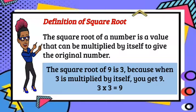To explain that, here we have the square root of 9 is 3, because when 3 is multiplied by itself, you get 9. So for the example, 3 times 3 is equal to 9.